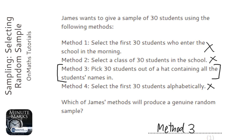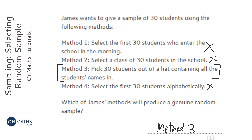If you're asked how to do a genuine random sample, names out of a hat — making sure that you have all the students' names in the hat and you mix it up quite well — that's always the best method.